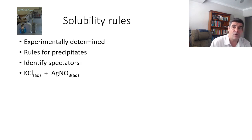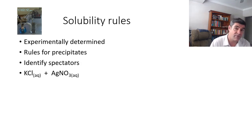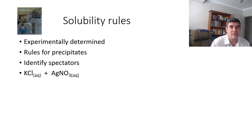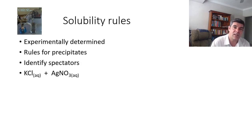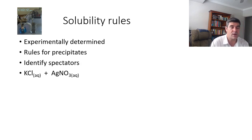Not all ionic substances are equally soluble in water. Some are very soluble, some only slightly soluble, and some dissolve to such small concentrations as to be virtually insoluble. There are two main ways that we can determine whether or not a particular ionic substance is going to dissolve in water and also to what extent.